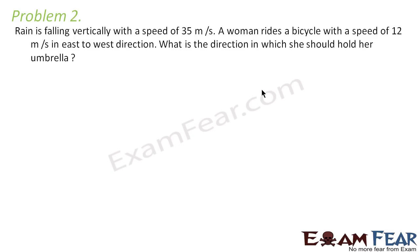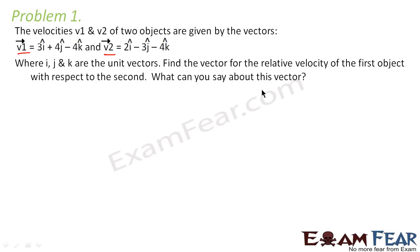Okay, so first of all let us find out the relative velocity. v1 is given, v2 is given. Relative velocity of first object with respect to second, that means v12 is the one which we have to calculate. So v12 is nothing but v1 minus v2.